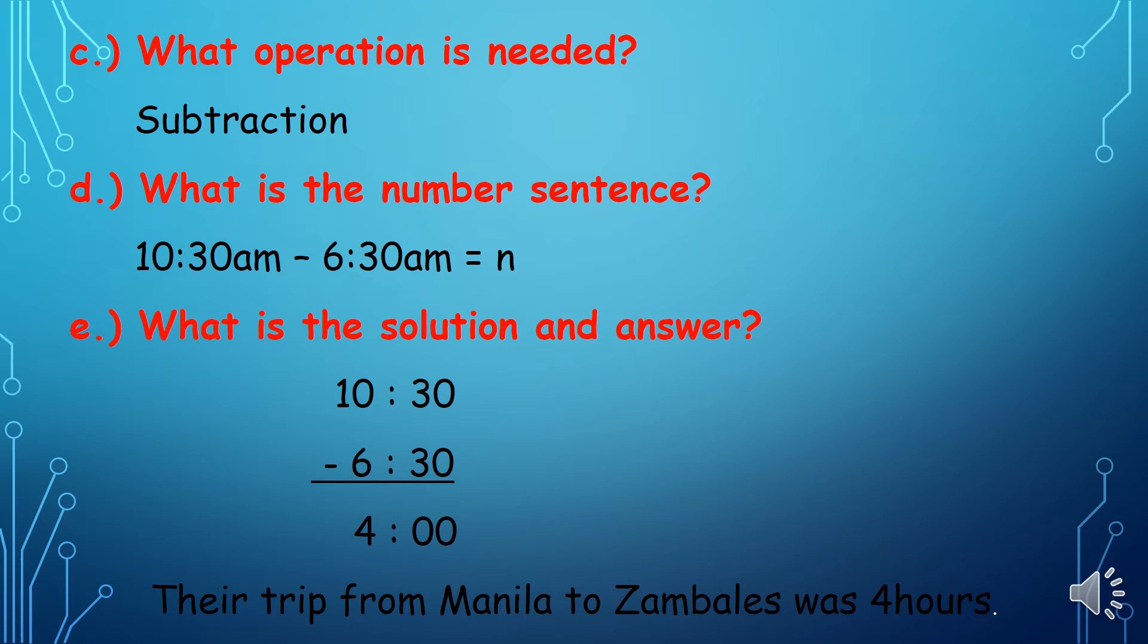What operation is needed? Subtraction. What is the number sentence? 10:30 a.m. minus 6:30 a.m. is equal to N. What is the solution and answer?